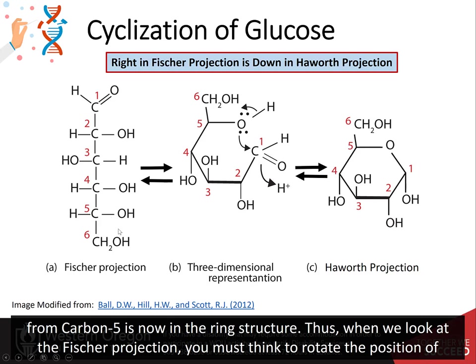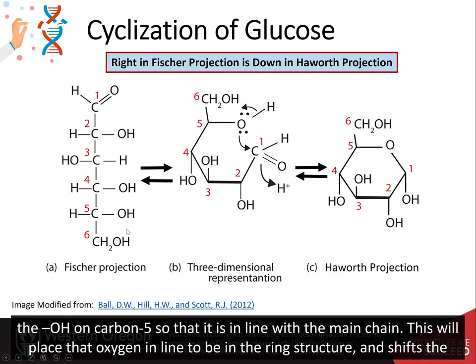Thus, when we look at the Fischer projection, you must think to rotate the position of the OH on carbon 5 so that it's in line with the main chain. This will place the oxygen in line with the ring structure.